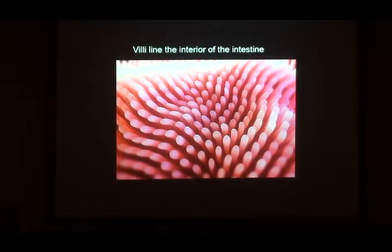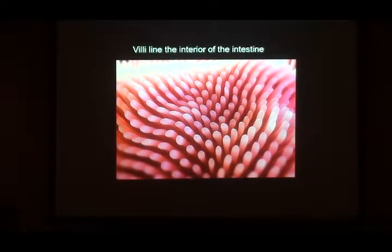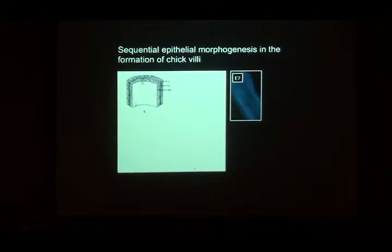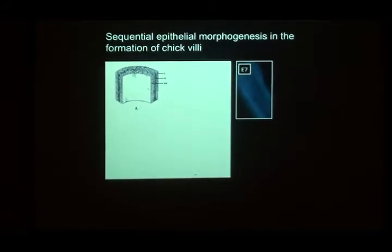In the adult intestine, the villi are maintained by stem cells at the base of the villi. But embryologically, the formation of the villi in the first place is not a stem cell phenomenon — it's a folding phenomenon. This is in the chick, which is actually a bit different from the mouse, but the human gut forms just the way the chicken does.